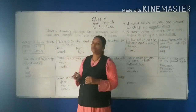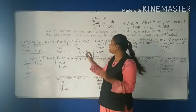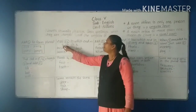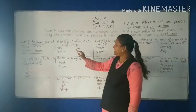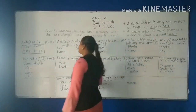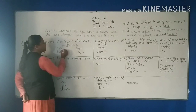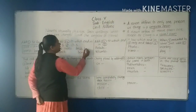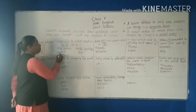The second rule: add 'es'. If a noun ends in 's', 'sh', 'ch', or 'x', we add 'es' to make the plural. For example, 'bus' ends in 's', so it becomes 'buses'. 'Bush' ends in 'sh', so it becomes 'bushes'. 'Branch' ends in 'ch', so it becomes 'branches'. 'Box' ends in 'x', so it becomes 'boxes'.